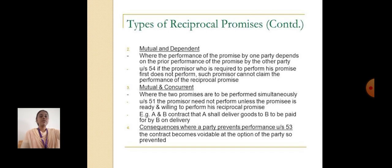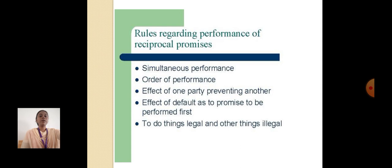Types of Reciprocal Promise: mutual and dependent; mutual and concurrent. Consequences where a party prevents performance: Under Section 53, rules regarding performance of reciprocal promises include the order of performance, effect of one party preventing another, doing things legal and other things illegal, and effect of default as to a promise to be performed first.